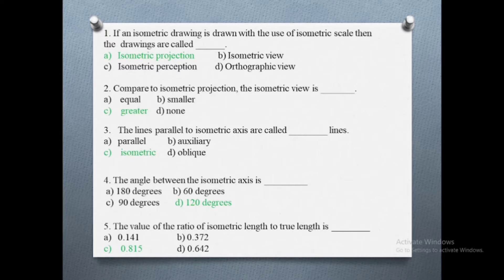Third question: the lines parallel to isometric axis are called dash lines. The correct options are: a) parallel, b) auxiliary, c) isometric, d) oblique. The correct answer is isometric.